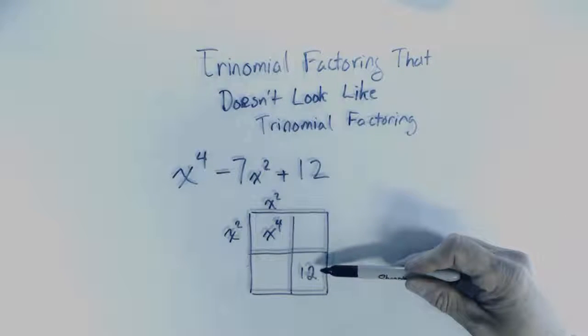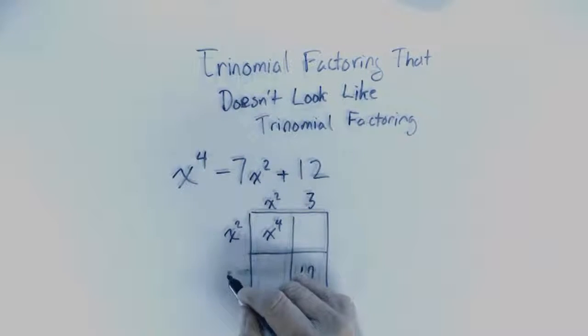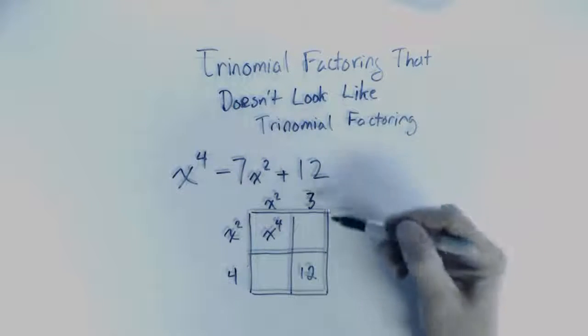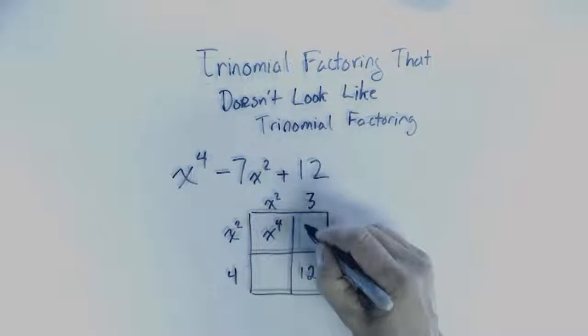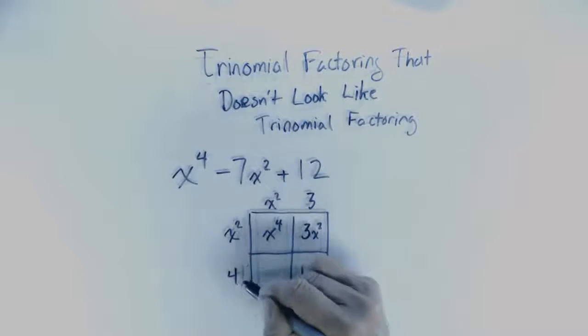Now I need something that multiplies to 12. I need two numbers that multiply to 12 and so I'm going to try 3 and I'm going to try 4. If that doesn't work, I'm just going to try something else. Okay, so this becomes 3x squared and this becomes 4x squared.